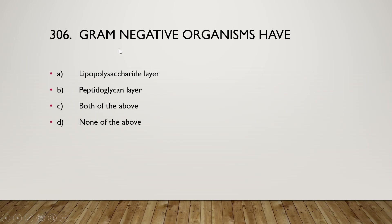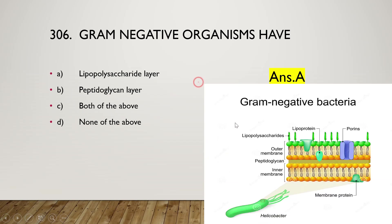Gram negative organisms have lipopolysaccharide layer, peptidoglycan layer, both of the above, or none of the above. The right answer is option A — lipopolysaccharide layer. In gram negative bacteria, outside the outer membrane, a lipopolysaccharide is present, which is also known as endotoxin.